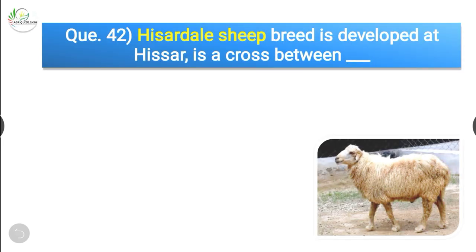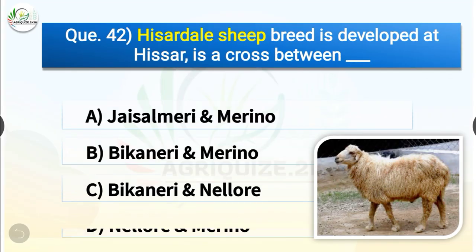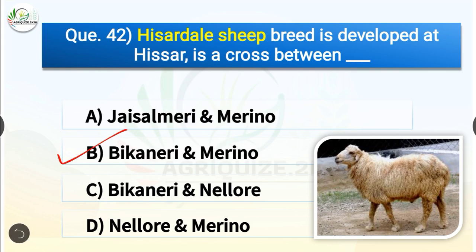Question number 42. Hisardale sheep breed is developed at Hisar and it is a cross between dash. The options are Jaisalmeri and Merino, Bikaneri and Merino, Bikaneri and Nellore, or Nellore and Merino. The correct answer is option B, Bikaneri and Merino. So Hisardale sheep breed is developed at Hisar and is a cross between Bikaneri and Merino.